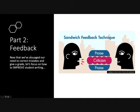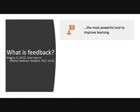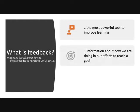Now that we've gone through how to do error corrections with a quick recap, let's focus on how to improve student writing — and this is done with feedback. What is feedback? This is where that great article by Grant Wiggins comes in: 'Seven Keys to Effective Feedback.' If you haven't read it already, now's the time to go back and look at it. Grant Wiggins says that feedback is the most powerful tool to improve student learning because it gives us information about how we're doing in our efforts to reach a goal.